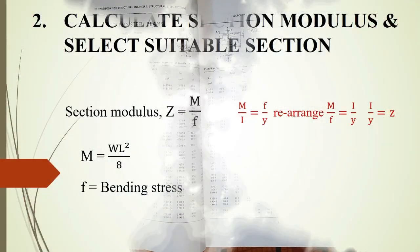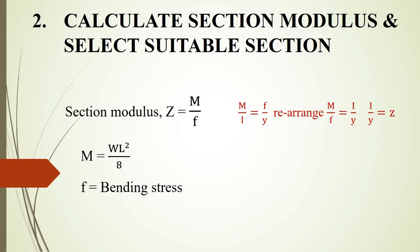One important note: Z from the formula is in mm³, while the steel table gives values in cm³. To convert, we divide by 10³ (since 1 cm = 10 mm), so we multiply by 10 raised to 3 when converting cm³ to mm³, or divide when going the other way.